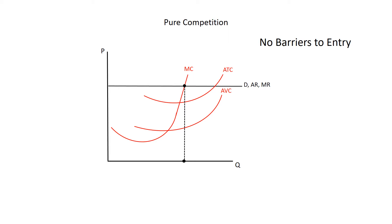Recall that one of the preconditions for pure competition is that there are no barriers to entry. That is, entrepreneurs can quickly and costlessly move resources into the industry in order to chase the economic profits that may exist. The question that arises is: is this firm, and all the others in the industry — which have identical cost relationships, because they all have access to and are knowledgeable of the same technology — earning economic profits?